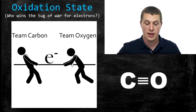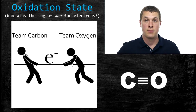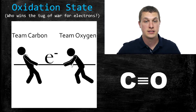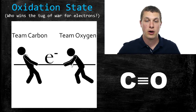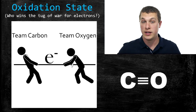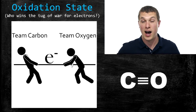Oxidation state is kind of a tricky concept. What it's really talking about is thinking about who wins the tug of war for electrons in a compound. So if you have carbon monoxide, for example, you have a carbon atom and an oxygen atom, and between them are a bunch of electrons. Because carbon and oxygen both have positively charged nuclei, because of all those protons, they're both pulling on the electrons between them. Oxidation state is one way to decide who wins this tug of war — it tells us how many electrons the oxygen effectively owns, and how many electrons the carbon effectively owns.